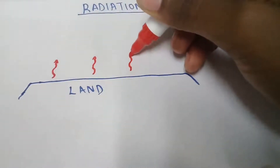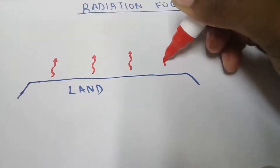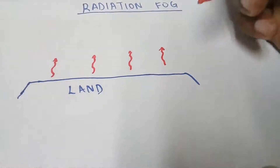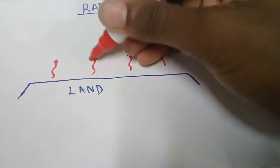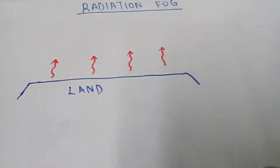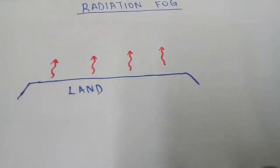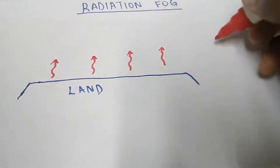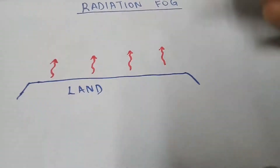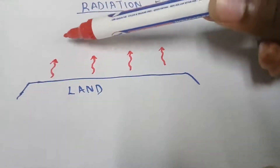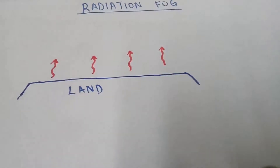There is radiation going up from the land, the warm air going up — that's terrestrial radiation. The land becomes cooler because of this radiation going up. Then the air above the land also cools down.